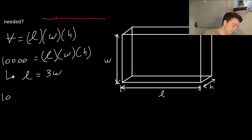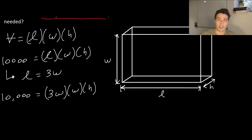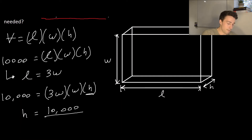Once we have that, I'm going to substitute our new value for L. So instead of L it's going to be 3W, multiplied by W, and then the height. Lastly, for this constraint function, I'm going to solve for the H variable — that's one of the variables we'll need in the next step. So H equals 10,000 divided by 3W squared. Now we've done steps one and two: we've found the constraint function and isolated a variable of interest.